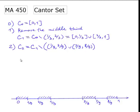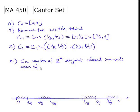As you can expect, at the nth step we obtain the set Cn which consists of 2 to the n disjoint closed intervals, each of length 1 over 3 to the power of n.